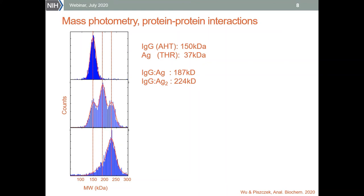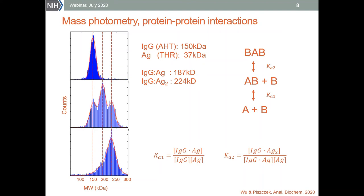Since mass photometry directly counts the molecular landing events and those distributions are number distributions, we can easily use this data to obtain the binding constants. If we know the populations of the free antibody, the one-to-one complex, and the two-to-one complex, we can directly calculate the values of both binding constants from the binding equations.